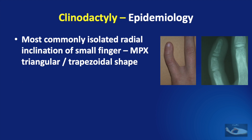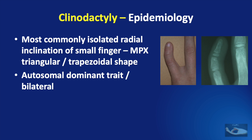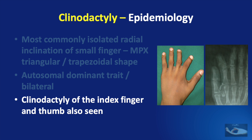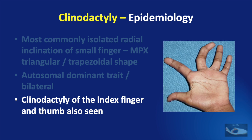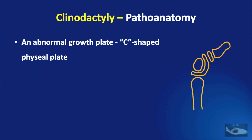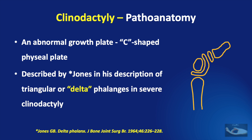The clinical presentation is most commonly as an isolated radial inclination of the little finger, owing to the middle phalanx adopting a triangular or trapezoidal shape. This form may be inherited as an autosomal dominant trait and is often bilateral. Clinodactyly of the index finger and thumb can also be seen as part of many syndromes and complex hand anomalies, and even the middle finger can be involved. The basic problem causing this abnormally shaped phalanx is an abnormal growth plate — a C-shaped physial plate extending along one side of the bone, forming a bracket that restricts longitudinal growth on that side.